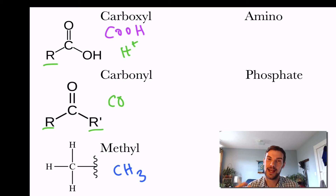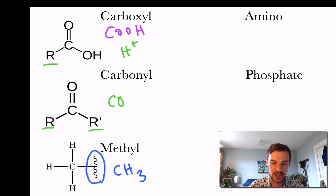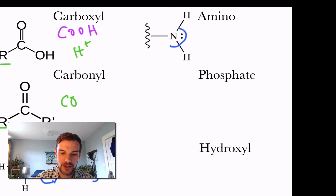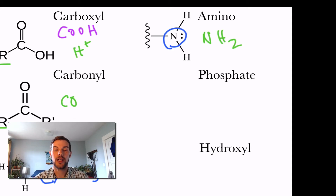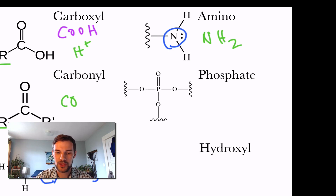A methyl group is written as CH3. If we attach a methyl group to DNA, it will actually shut down the expression of that DNA — no genes or proteins will be made from that portion. The squiggly line just means it's attached to a different molecule or element. Amino groups are really important because they contain nitrogen, written as NH2. If an amino group is paired with a carboxyl group and some other groups, it's going to be an amino acid — the monomer used to make proteins.